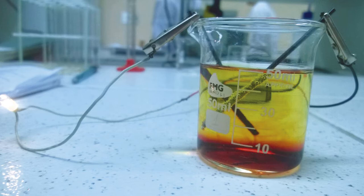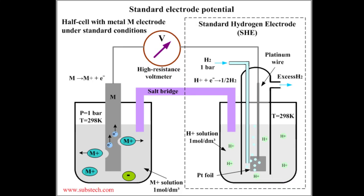When we talk about the Nernst equation for electrode potential, we have already learned that the electrode potential of an electrode is said to be the standard electrical potential if it is measured under standard conditions — that is, when the electrolyte concentration is one molar and the temperature is 298 Kelvin.